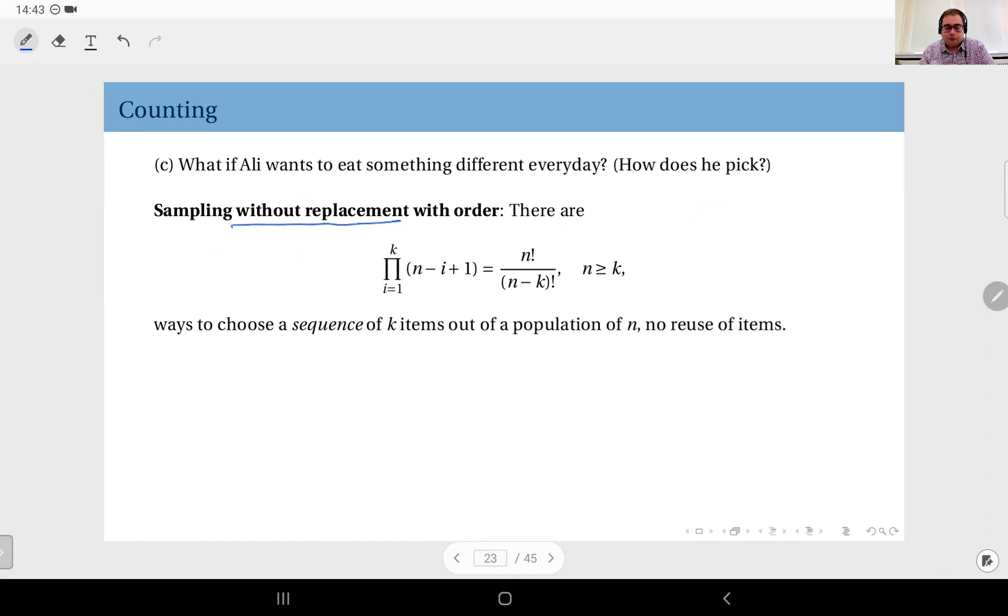So this, as we have just seen, is going to give you n factorial divided by (n minus k) factorial ways to choose a sequence of k items out of a population of n with no reuse of items. That's why we call this without replacement.